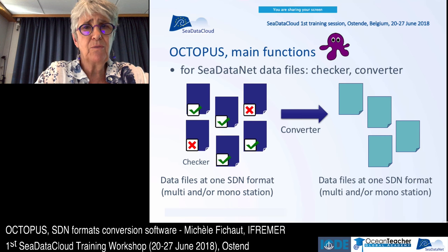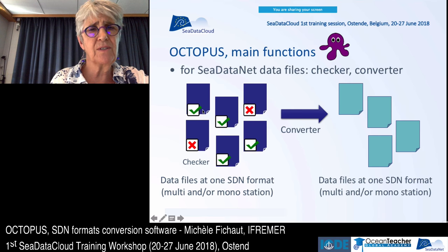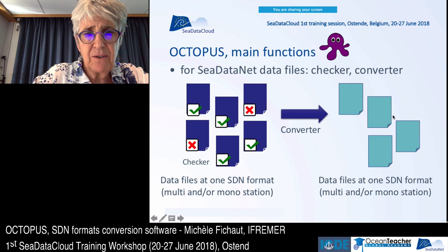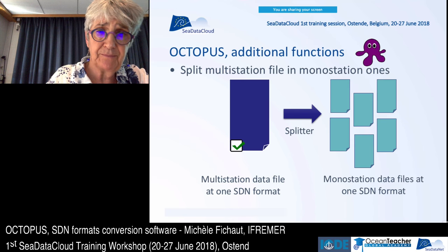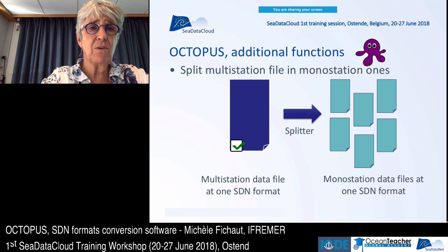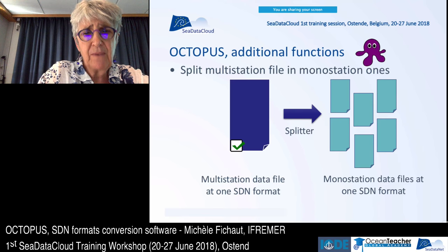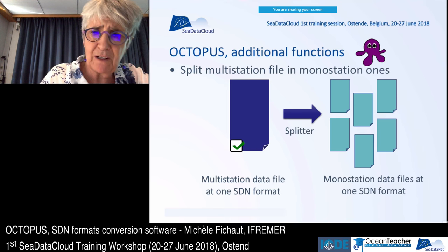The main functions of Octopus are to check and to convert cDataNet files. One or several data files in cDataNet format can be converted to one or several data files at another cDataNet format or at the same cDataNet format. Octopus also allows splitting a multi-station file into mono-station ones — input is one file with several stations, output is several files with one station.